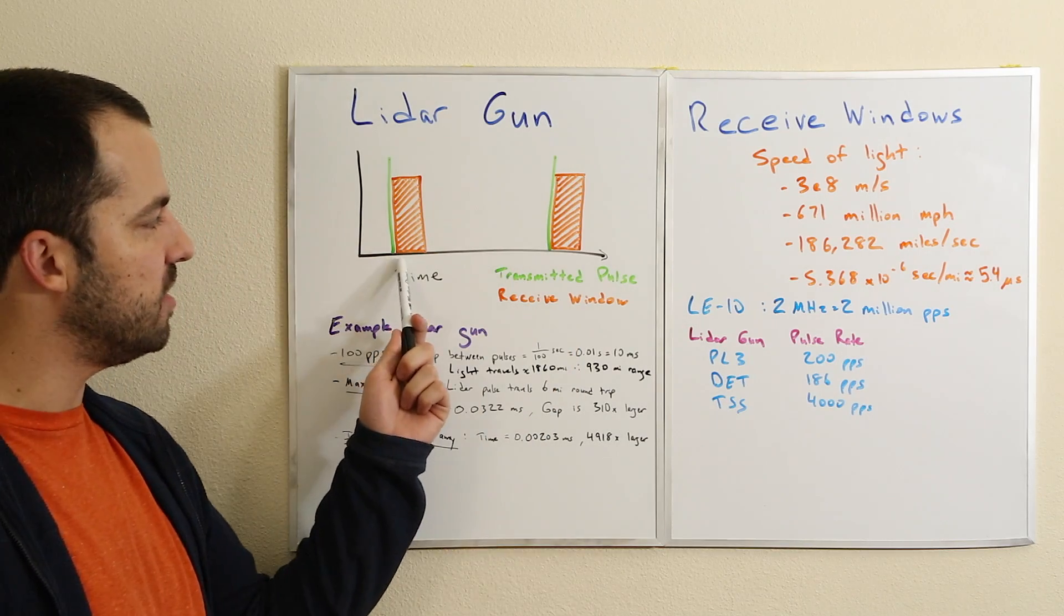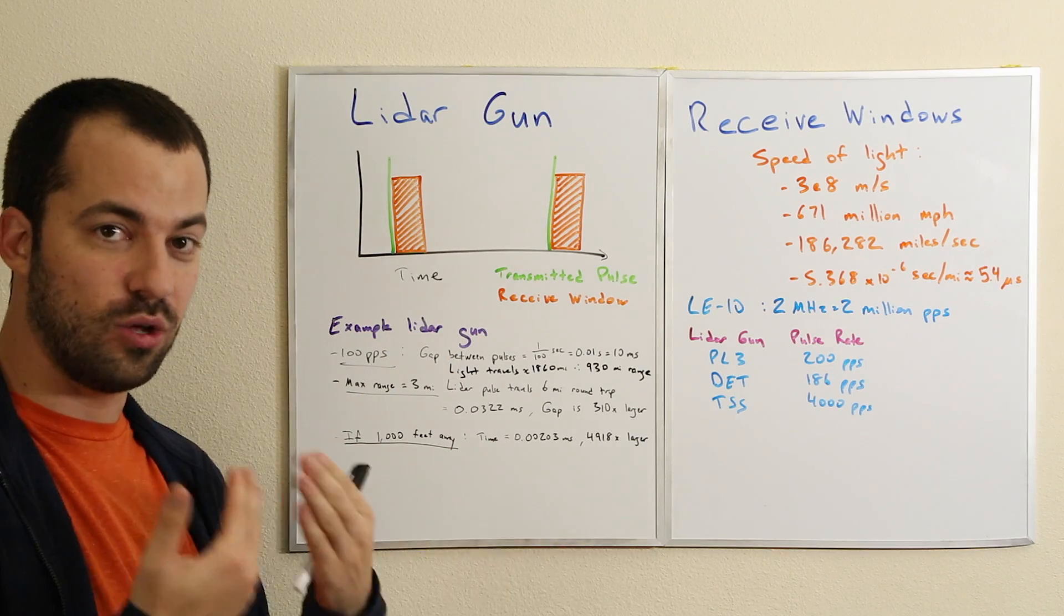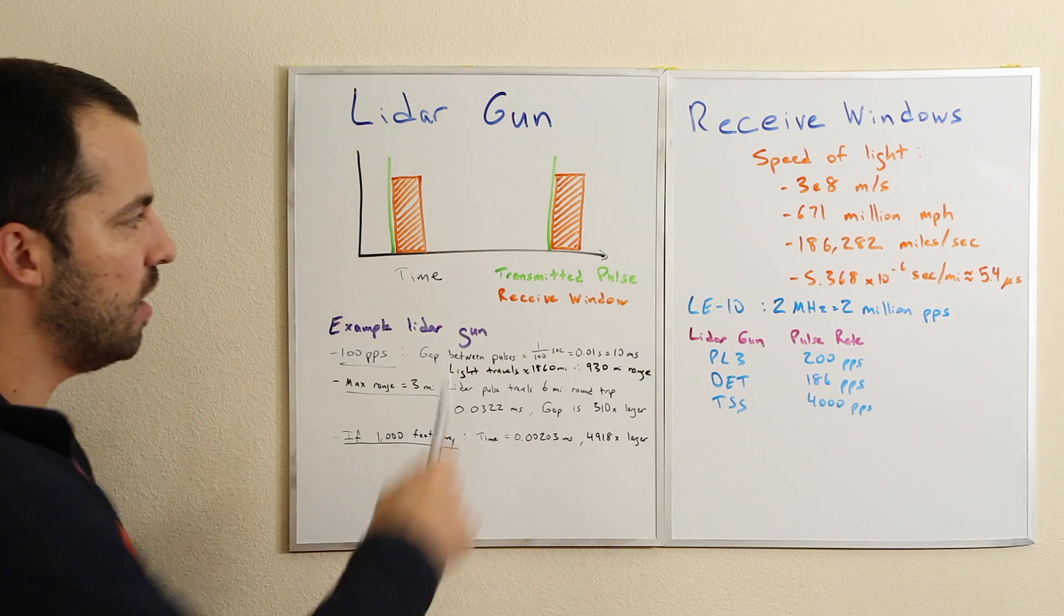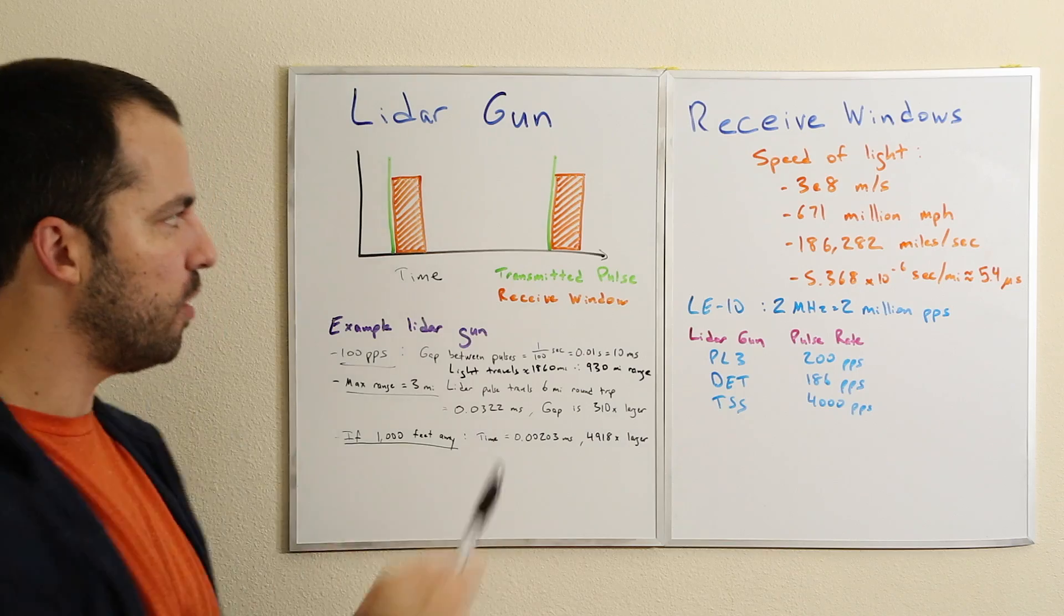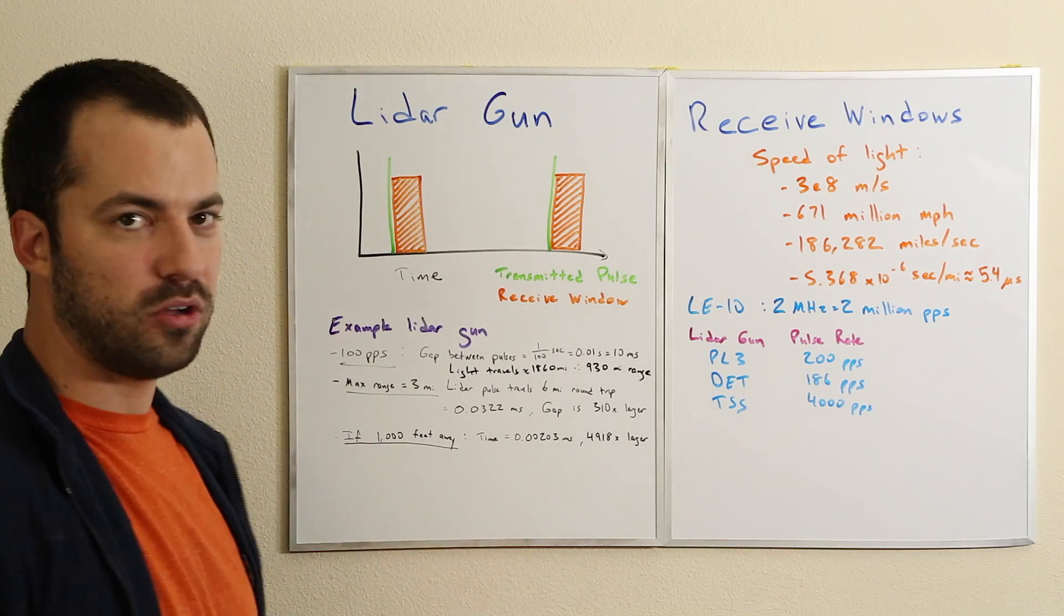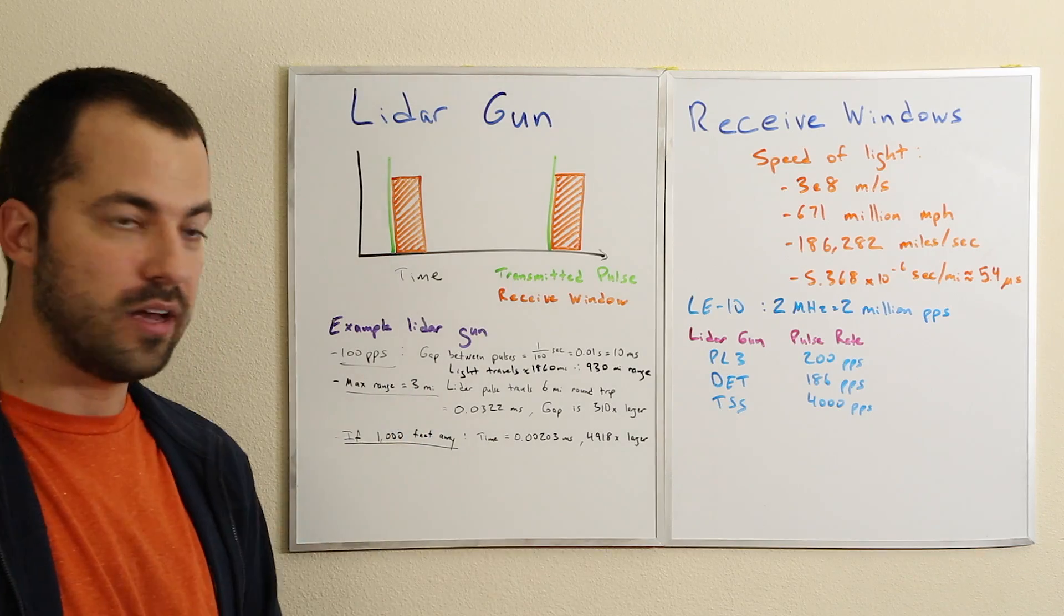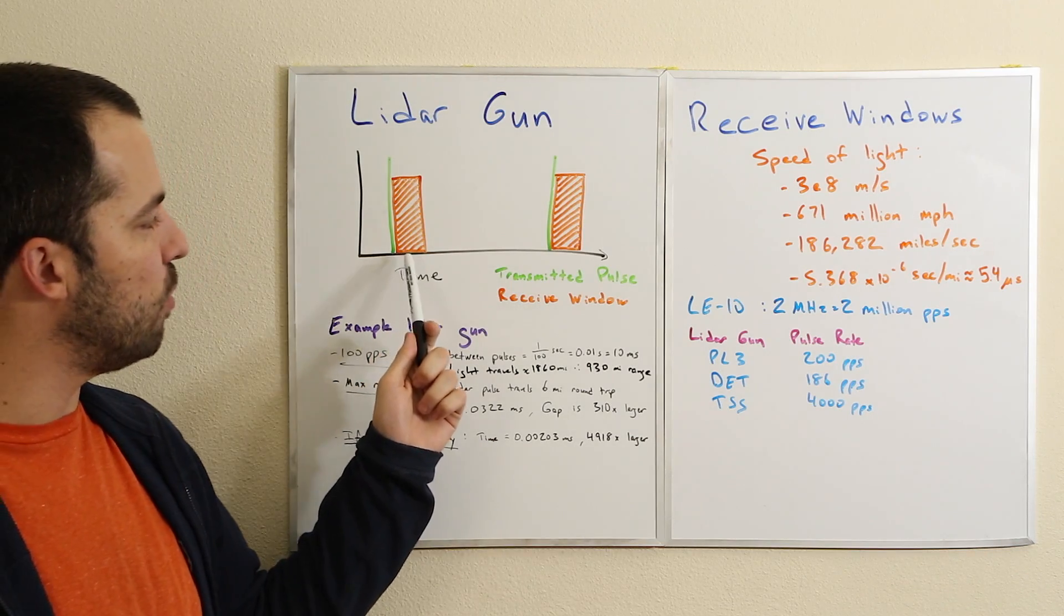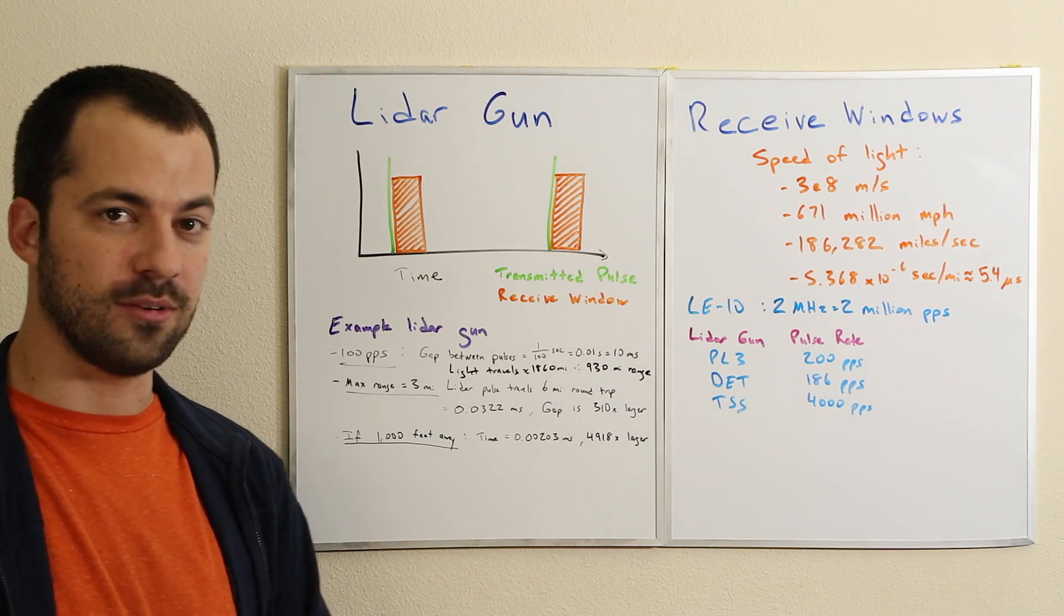You can see the vast majority of the time in here it's going to ignore everything. There's no point trying to look for return pulses hundreds of miles away. That's why lidar guns actually only have a small window of opportunity when a legitimate pulse can come back - completely ignoring laser jammers, that's the only time when even a legitimate pulse can come back.